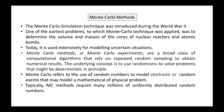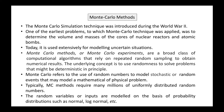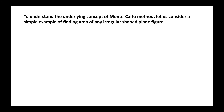The underlying concept is to use randomness to solve problems that might be deterministic in principle. Monte Carlo refers to the use of random numbers to model stochastic events — statistical in nature — that model a mathematical or physical problem. Typically, Monte Carlo methods require many millions of uniformly distributed random numbers. By uniformly distributed we mean the numbers should be spread evenly, not concentrated in one area. Random variables or inputs are modeled based on probability distributions such as normal, binomial, Gaussian, or lognormal.